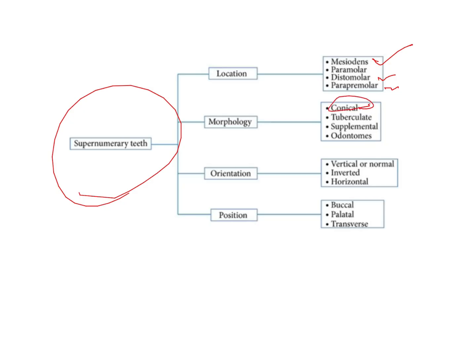Based on morphology, you have: conical, which is the mesiodense; tuberculate, which is a tubercle-like extension seen in the bone; third is supplemental — a supernumerary tooth that very closely resembles the primary parent tooth (for example, the lateral incisor is said to be a supplemental supernumerary to the central incisor); and then you have odontomes, which are odontogenic tumors or hamartomas — multiple tooth-like structures which are attached and can be either complex or compound.